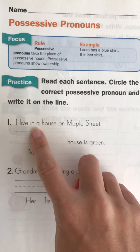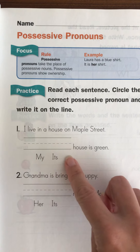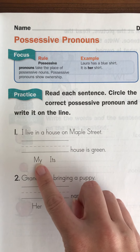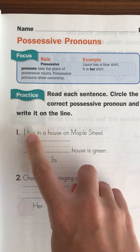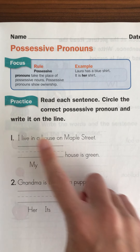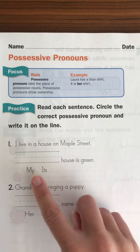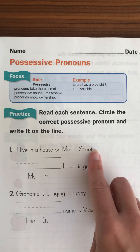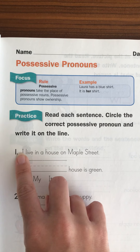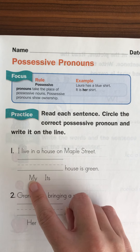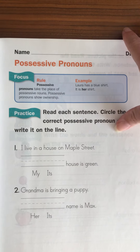For example, I live in a house on Maple Street. The possessive pronoun would either be 'my' or 'its' because you're talking about the house that I live in. So here we would say, blank house is green — would we say 'its house is green' or 'my house is green'? If I live in a house on Maple Street, then it's 'my house.' So that's what they're doing on the first page.